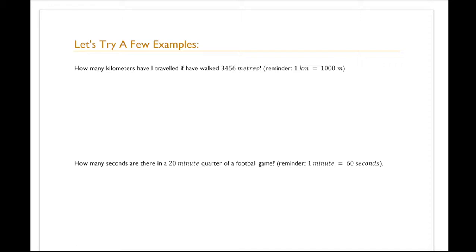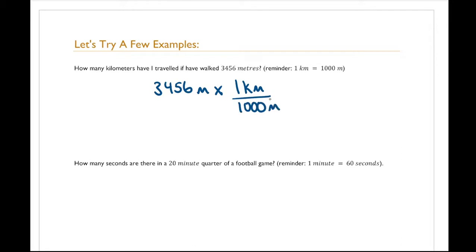First example: how many kilometers will I have traveled if I've walked 3,456 meters? Our unit rate is 1 kilometer equals 1,000 meters. We start with 3,456 meters and multiply by 1 kilometer over 1,000 meters. The meters cancel out, and this works out to 3,456 divided by 1,000, giving us 3.456 kilometers.